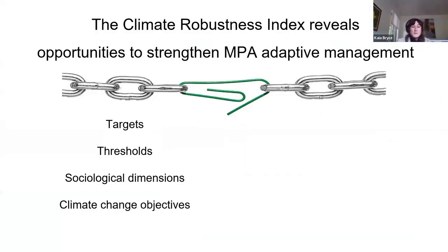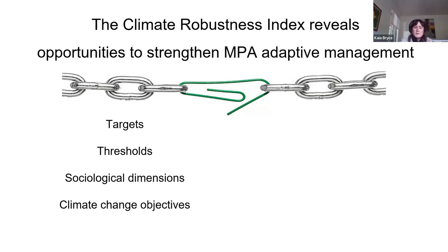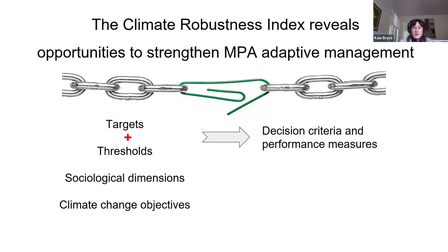The low representation of targets, thresholds, sociological dimensions, and climate change objectives suggests that there are opportunities to support better adaptive management of MPAs, while the comparatively higher performance of MPAs managed as a partnership represents a strength to lean into. In the next slides, we'll talk about the potential for strengthening climate adaptive MPA planning by setting targets and thresholds to establish decision criteria and performance measures, and integrating social dimensions and climate change objectives by creating social ecological objectives.